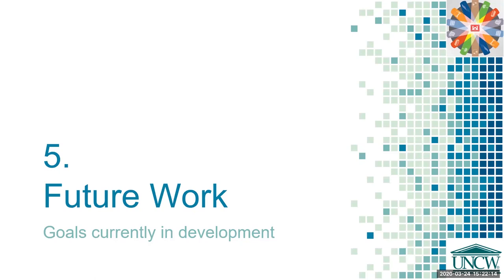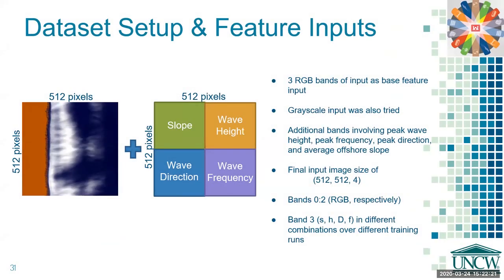There are still a lot of research goals currently in development. The first is incorporating wave condition inputs into the network to get better test results. While we are currently using RGB bands, grayscale bands have also been tried and found to be about as effective for the synthetic data set. Because offshore wave conditions such as wave height, wave direction, and wave frequency are available worldwide due to global wave and tide models, evaluating whether they would be useful input features to improve the RMS is of interest before moving on to real imagery. We have input these features as quadrants into an additional band for the U2-Net architecture, with slope as an input being reported in this presentation.